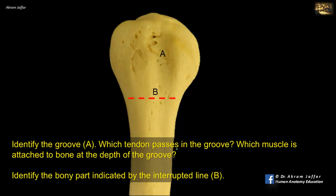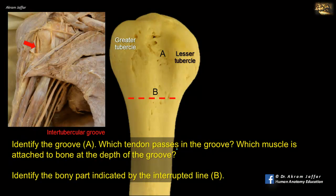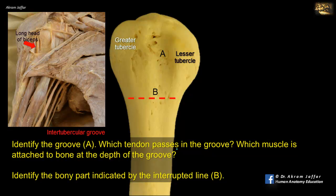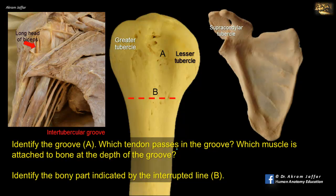Identify the groove A: which tendon passes in the groove and which muscle is attached to the bone at its depth? The groove is the intertubercular groove of the humerus, lying between the greater and lesser tubercles — hence intertubercular. It is also called the bicipital groove since it lodges the tendon of the long head of the biceps muscle, which arises from the supraglenoid tubercle of the scapula within the capsule of the shoulder joint.